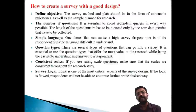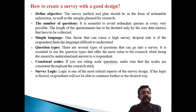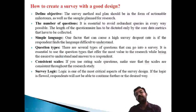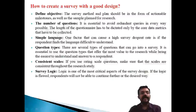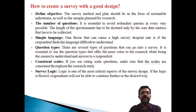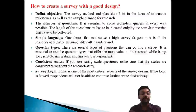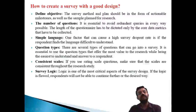The third element is using simple language. Good surveys use simple language; if respondents find the language difficult to understand, there will be a high survey dropout rate. The fourth element is question type — there are several types of questions, and it is essential to use question types that offer the most valuable research data. The fifth element is consistent scale — your scale, such as a Likert scale, must be consistent when converting qualitative statements to a quantitative format.